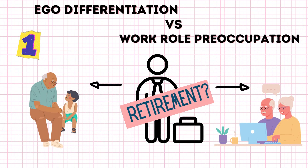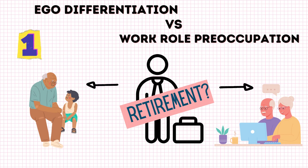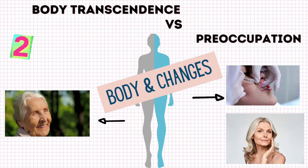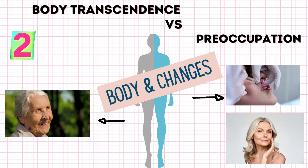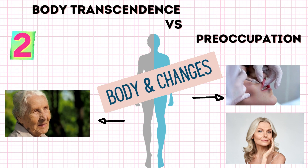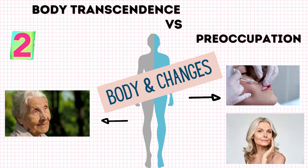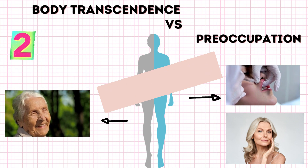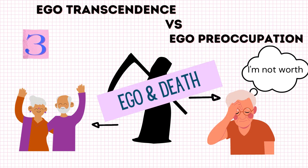The first stage explains what happens after retirement: do they redefine themselves, such as becoming a grandfather, or do they still value working as their primary role? Next, body and physical changes — wrinkles are part of getting older. Do they accept their physical changes, or are they planning for plastic surgery? The last stage is about ego and death: is the person worried about death because they feel they did not contribute enough to society, or are they satisfied with their life and ready to accept that death is coming?